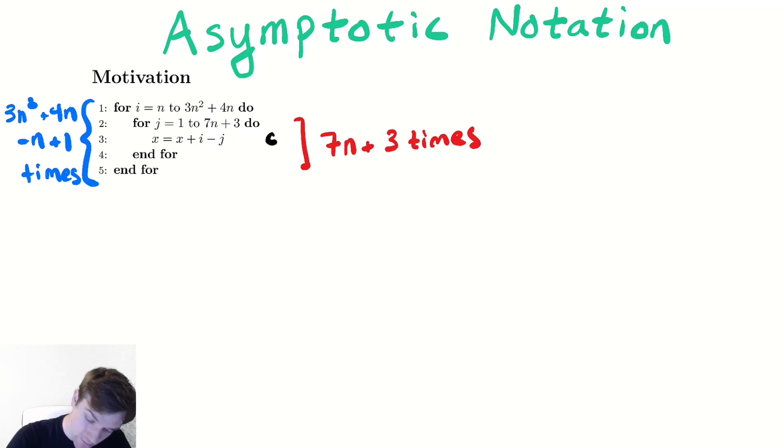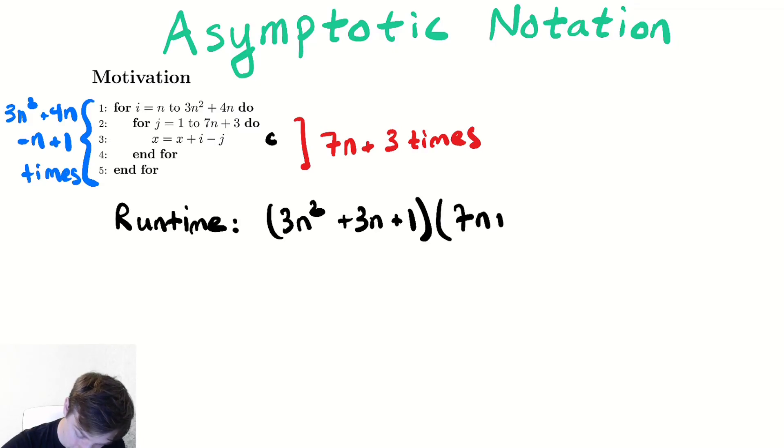So the total number of times the runtime is something like 3n squared plus 4n minus n, that gives me a plus 3n plus 1, times 7n plus 3. That is the number of iterations of line three.